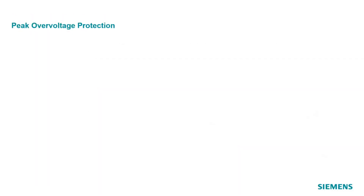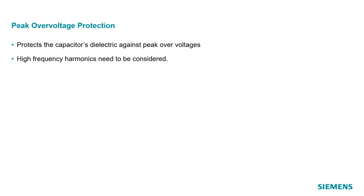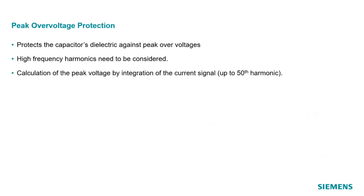The peak overvoltage protection protects the dielectric of the capacitor against too high voltages. It is necessary to also consider higher harmonics because they also contribute to the stress for the dielectric. ZipROTEC 5 with a sampling frequency of 8 kHz considers reliably all harmonics up to the 50th. Different from what someone would expect, not the voltage across the capacitor but the current through the capacitor is measured. The transmission behavior for higher harmonics of a current transformer is much better than of a voltage transformer, so the peak voltage is calculated by integration of the measured current and no additional voltage transformer is necessary.